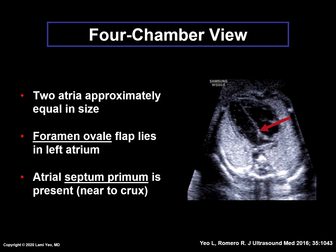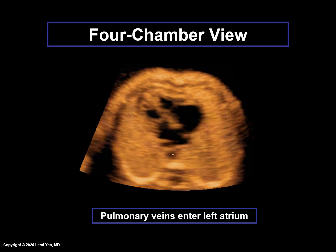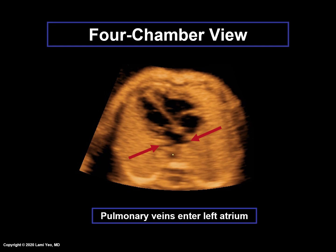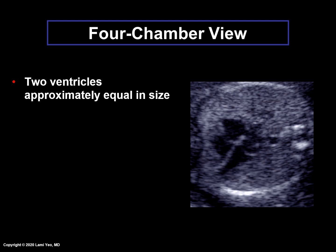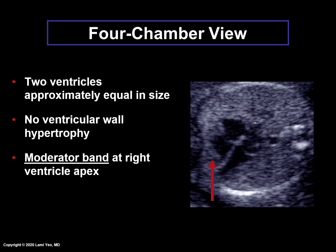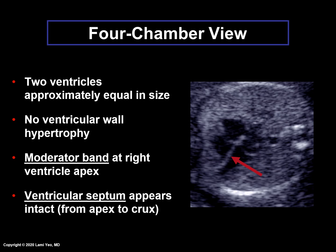The atrial septum primum should be present near the crux. The pulmonary venous anatomy should be seen entering the left atrium, noting the normal connection of at least one right and one left pulmonary vein. The two ventricles should be approximately equal in size and without ventricular wall hypertrophy. One way to identify the right ventricle is the moderator band, which is a large muscle bundle at the right ventricle apex. The ventricular septum should appear intact from the apex to the crux.